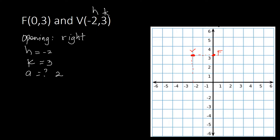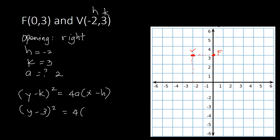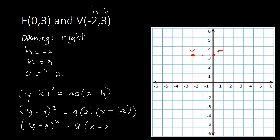Now that we have h, k, and a, we write the standard equation. Since it opens to the right, the formula is (y − k)² = 4a(x − h). Plugging in: (y − 3)² = 4(2)(x − (−2)), which simplifies to (y − 3)² = 8(x + 2). This is our standard equation.